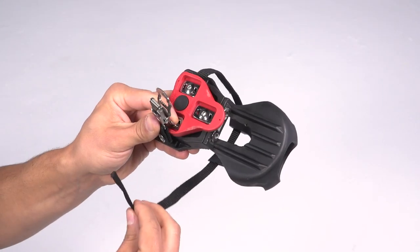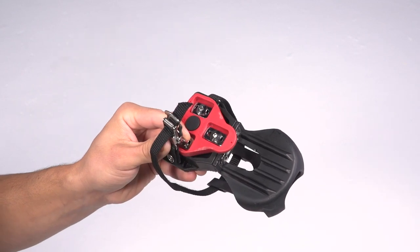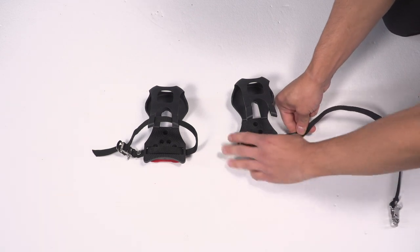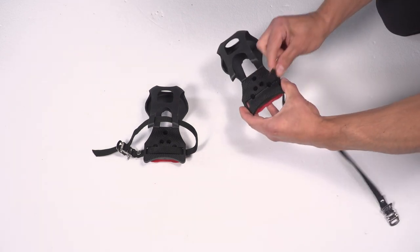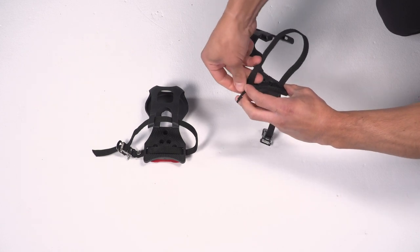Squeeze the buckle and thread the free end of the strap under the roller and through the tooth opening. Repeat the process with the second clip and strap, but this time start on the opposite side. The buckles need to face out when you're on the bike.